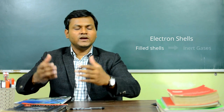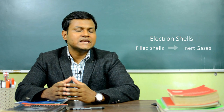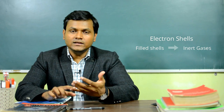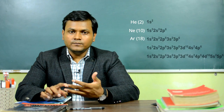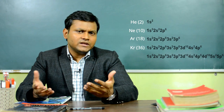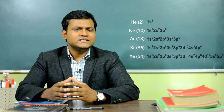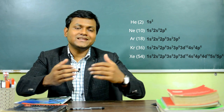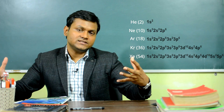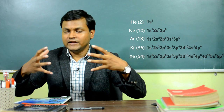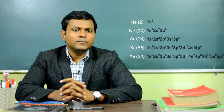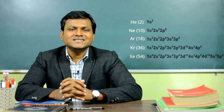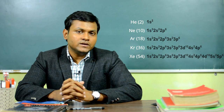These stable configurations correspond to what is known as inert gases or noble elements like helium, neon, argon, krypton, etc. Whenever you have atomic structures which correspond to certain numbers that lead to filling up of these shells of atomic energy levels, they end up creating very stable electronic structures and correspond to very stable chemical elements.